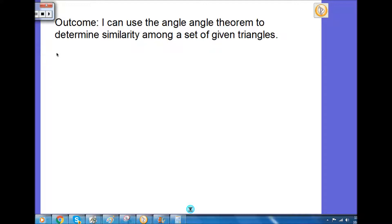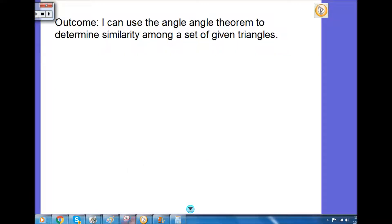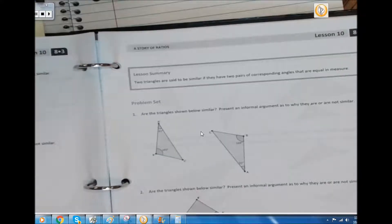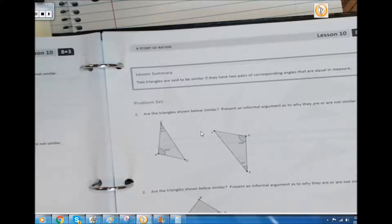Angle angle, stop talking. All right, so first we're going to do a couple things in your module book. Turn to page 53. On page 53 there is a lesson summary at the top of the page and it says that two triangles are said to be similar if they have two pairs of corresponding angles that are equal in measure. That's a lot of words, I don't know why math has to be so fancy.